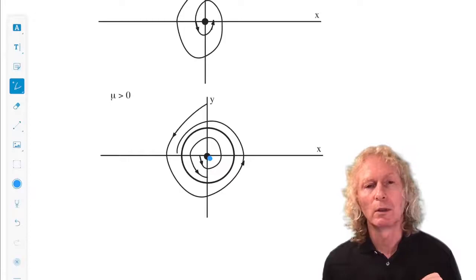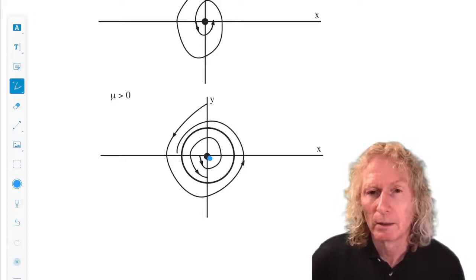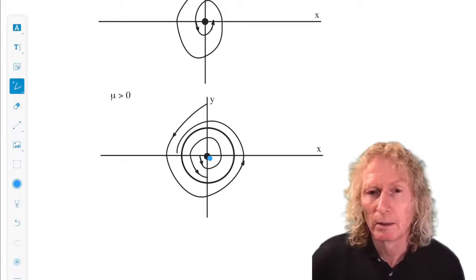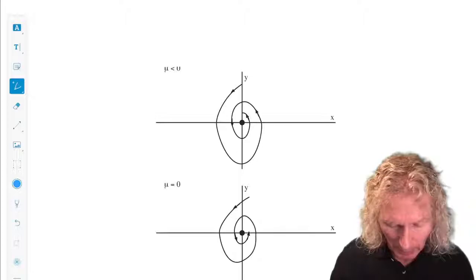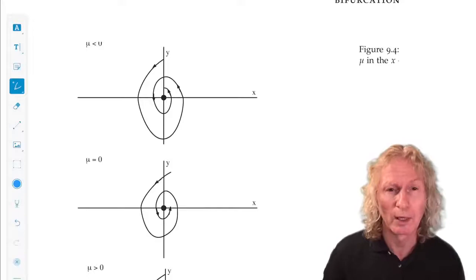Okay, so mu and a completely describe this bifurcation. A told us about stability of the periodic orbit. Okay, periodic orbit in this case for a less than zero is stable. A greater than zero is unstable. A equals zero is a degenerate case that we could look at, but we're not going to right now.